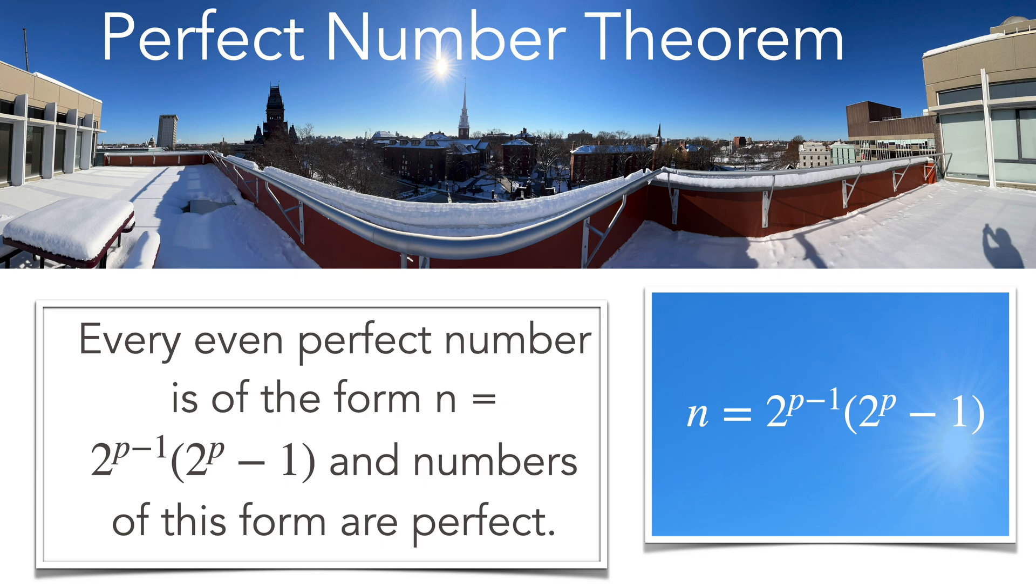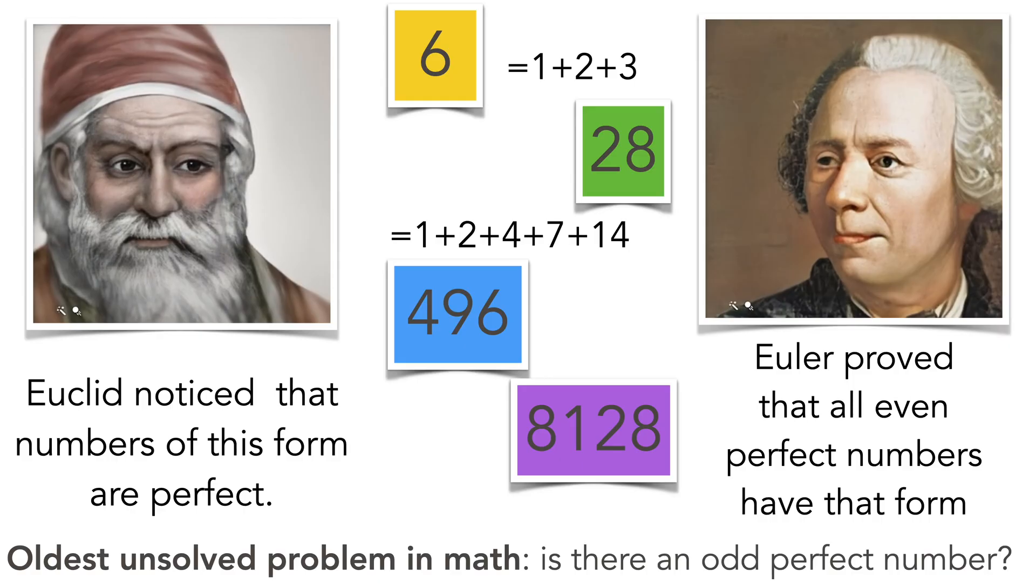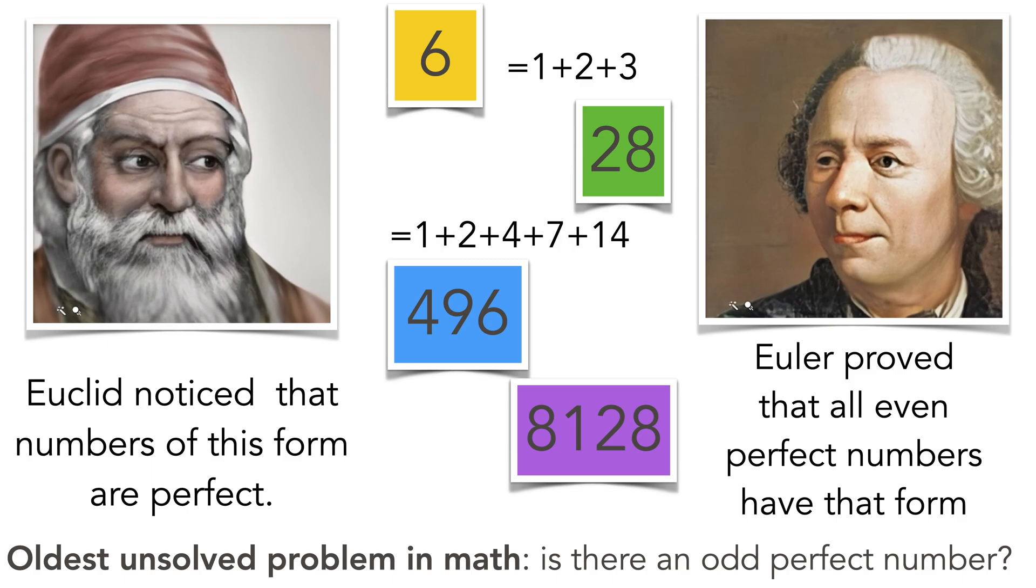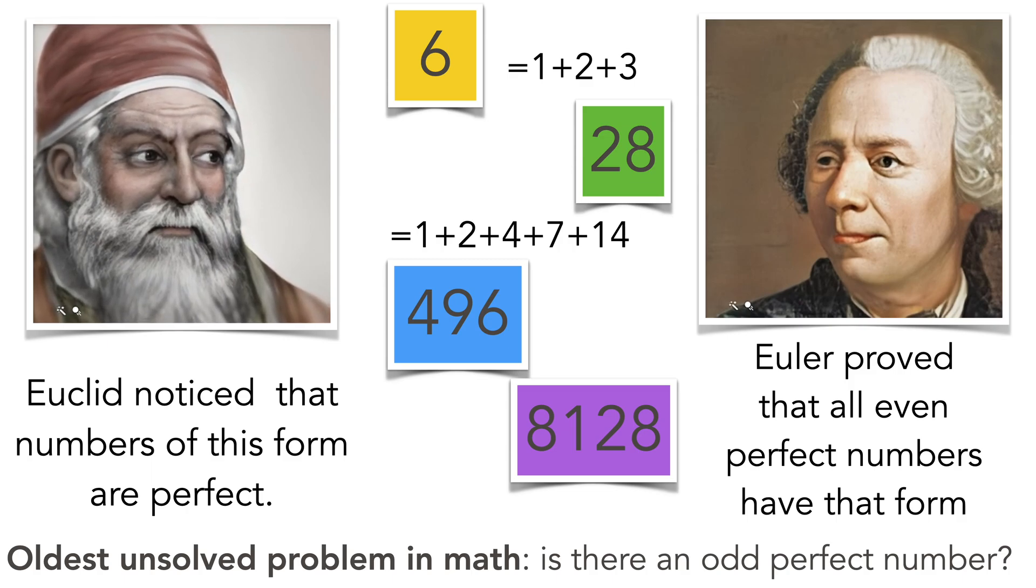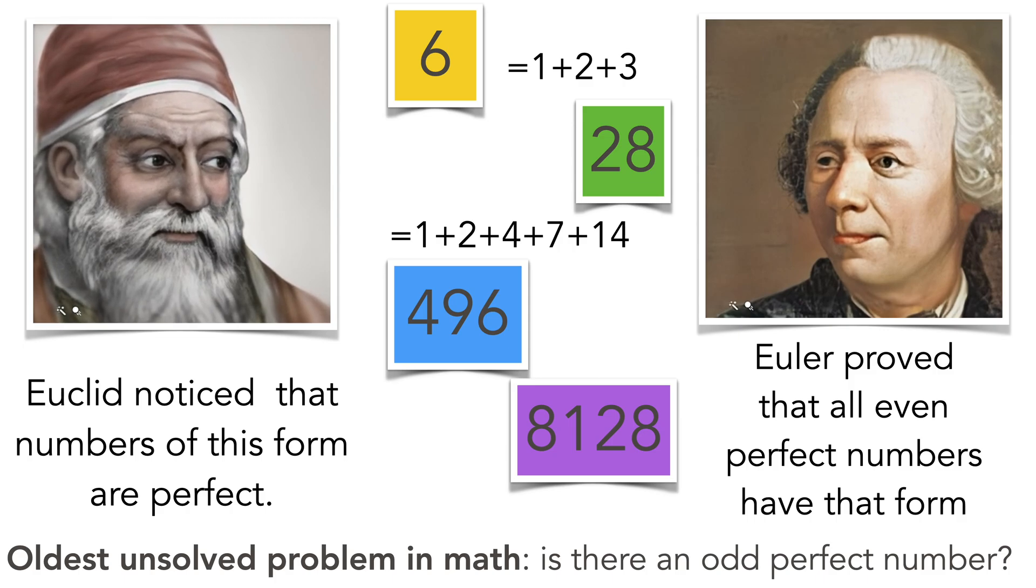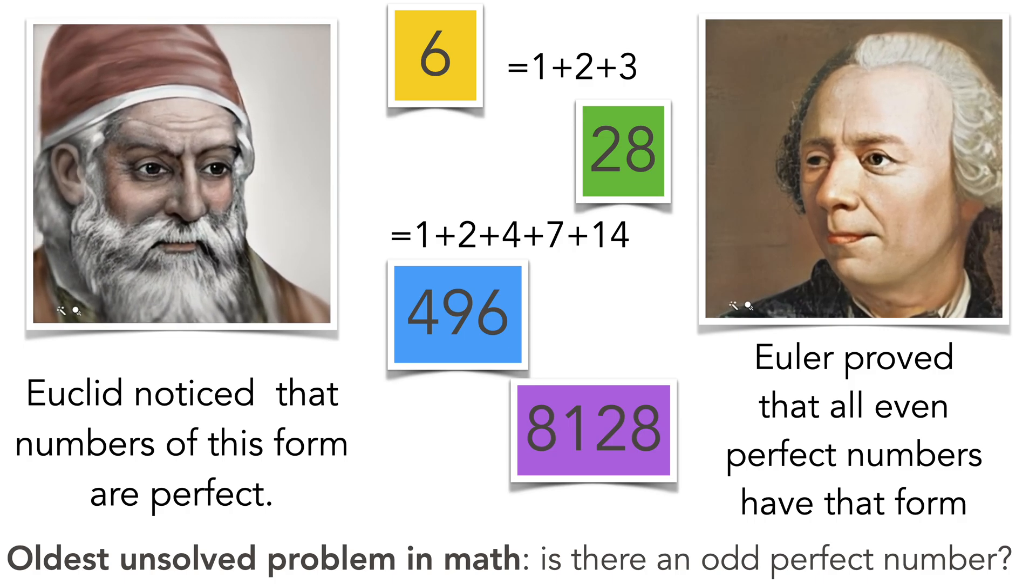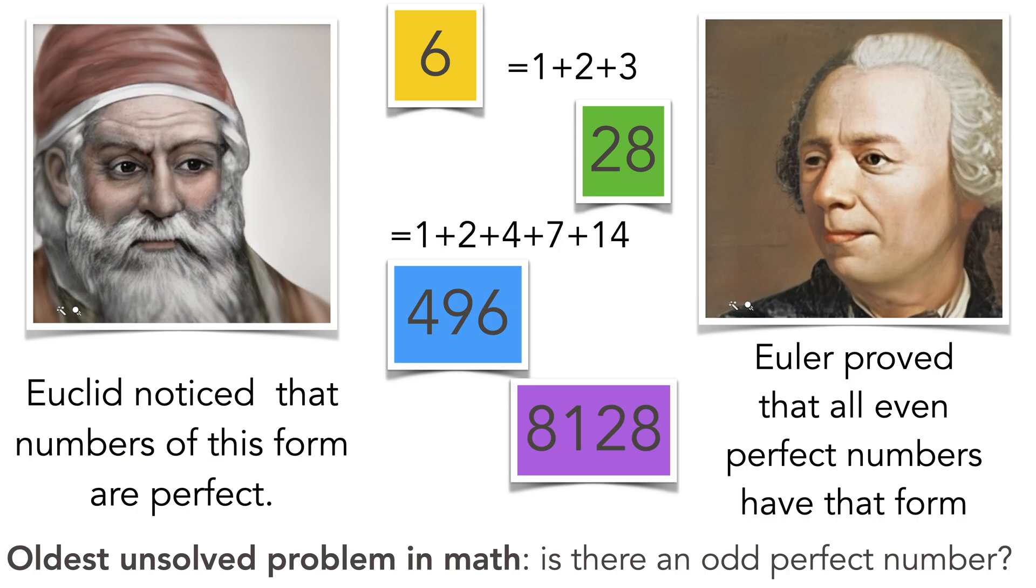The perfect number theorem is one of the oldest theorem in number theory. It characterizes even perfect numbers. They are of the form 2 to the p minus 1 times 2 to the p minus 1. It was Euclid who realized that if you take such a number then it's perfect, it's the sum of its proper factors like 6 is 1 plus 2 plus 3. And then Euler proved that all even perfect numbers have that form.